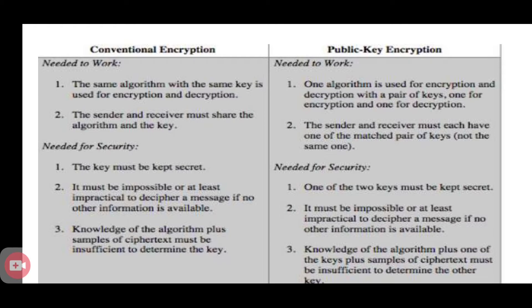Knowledge of the algorithm plus samples of ciphertext must be insufficient to determine the key. In the case of public key encryption, it is asymmetric because two separate keys — a key pair — are used. The sender and receiver must each have one of the matched pair of keys, and one of the two keys must be kept secret as the private key while the other is the public key.